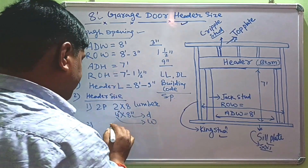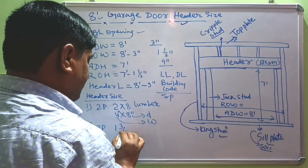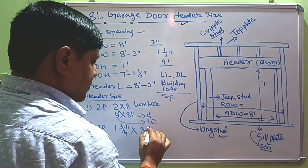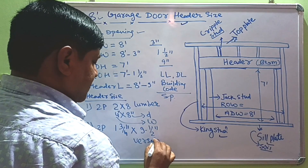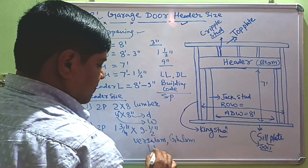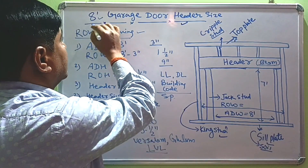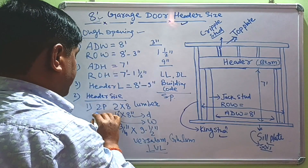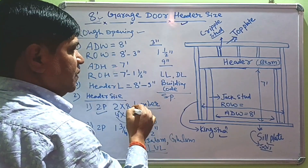If you use LVL lumber, you can use two pieces of 1¾ by 9½ inches LVL lumber. It may also be laminated lumber. Our suggestion is: if your garage door opening is about 8 feet, you can use a header size of two pieces of 2x8 lumber glued together.